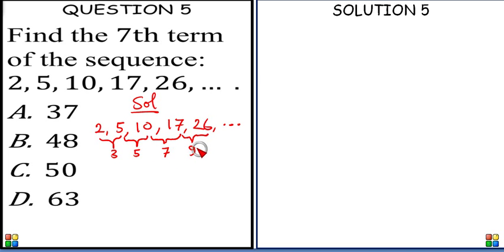So definitely, for the next term there is going to be a difference of 11. 3 plus 2, that's 5. Plus 2, that's 7. Plus 2, that's 9. I mean 3 plus 2, 5. 5 plus 2, 7. 7 plus 2, 9. 9 plus 2, it's going to be 11.